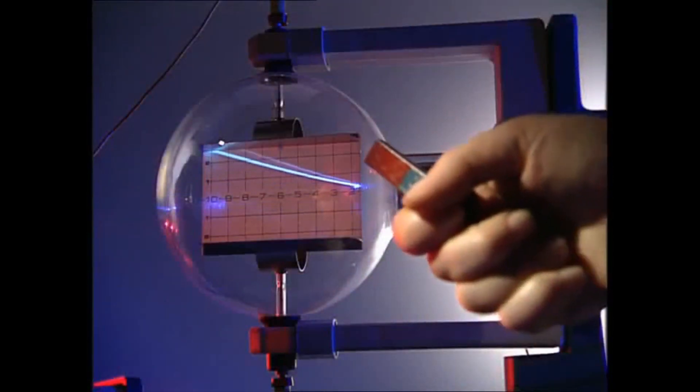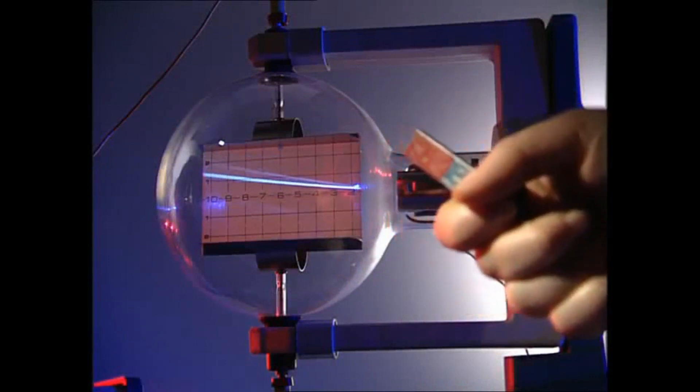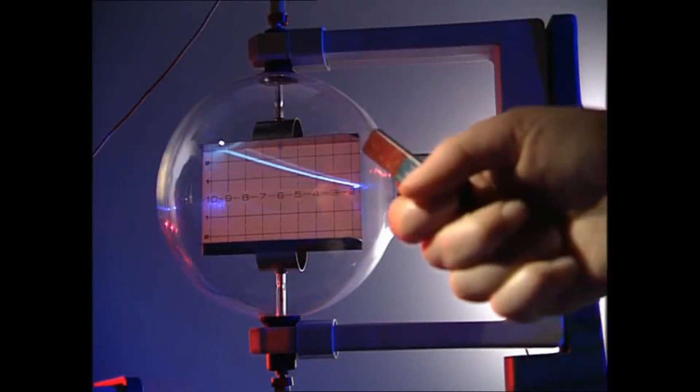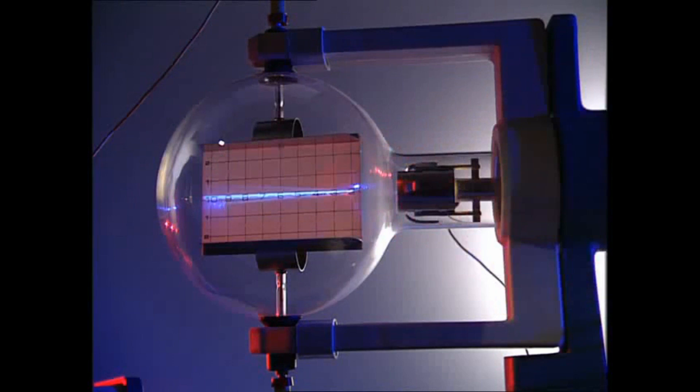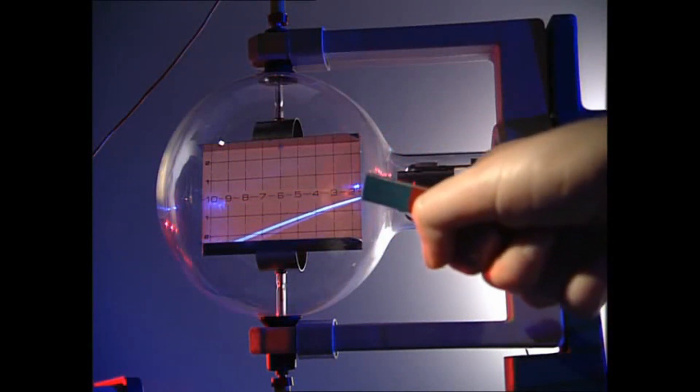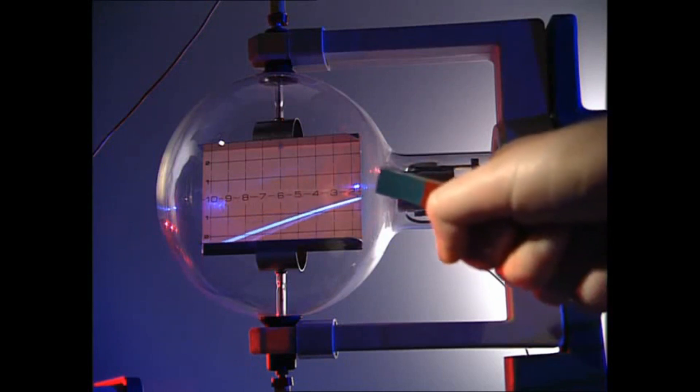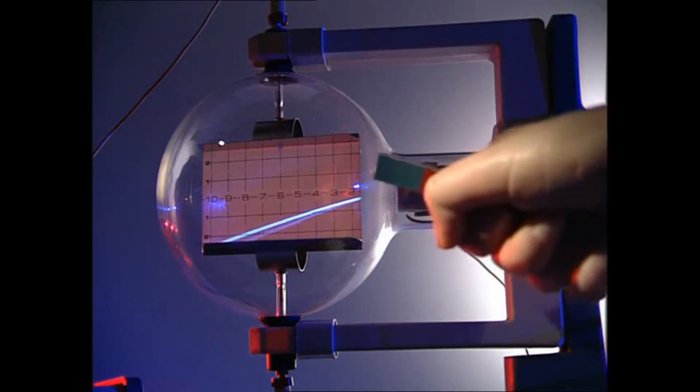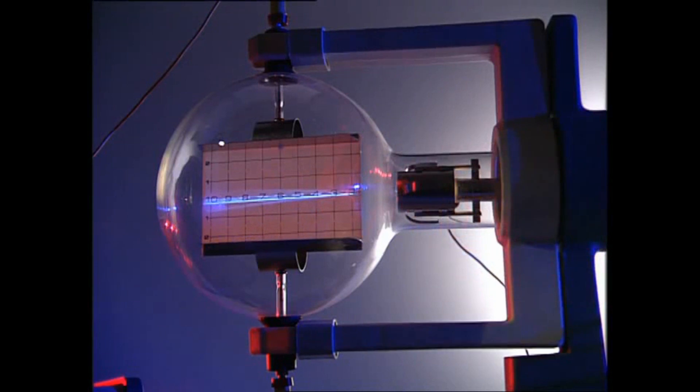Scientists knew that a magnetic field could deflect the path of a cathode ray beam. Turn the magnet round and the beam is deflected in the other direction. Thompson measured the size of this deflection. He worked out that cathode rays were made of tiny particles, hundreds of times smaller than an atom.